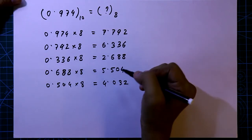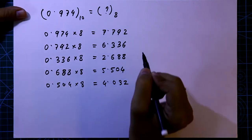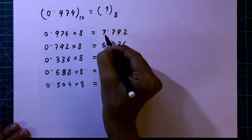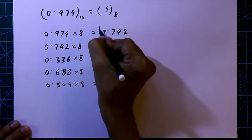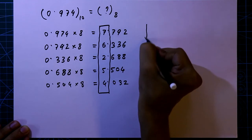You can do it more, but 5 steps is enough for us. Now see the integer part. We will see this from top to bottom.